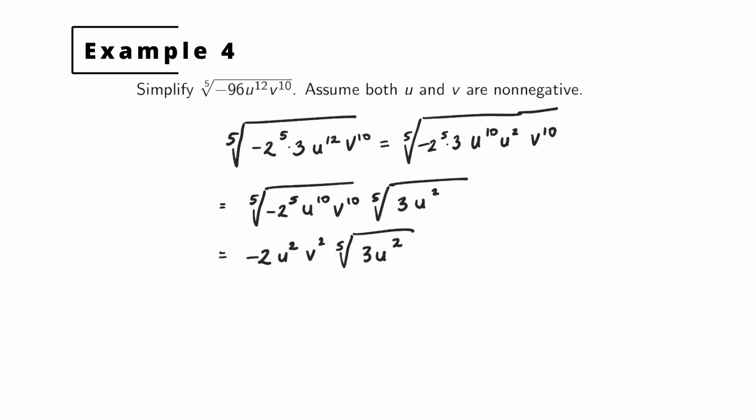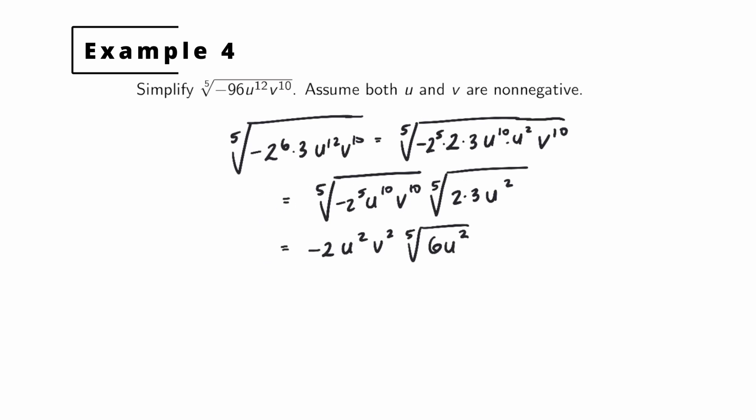Times the fifth root of 3u squared. And that's it for simplifying radical expressions. These can be challenging, so make sure you practice a lot. Until next time, have fun!